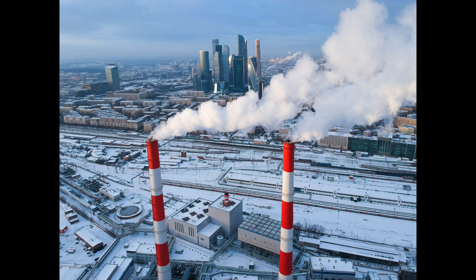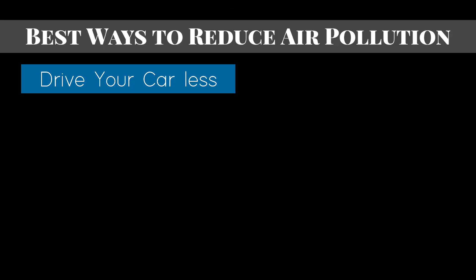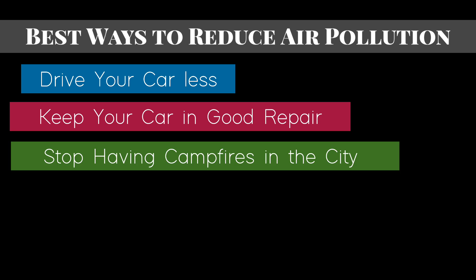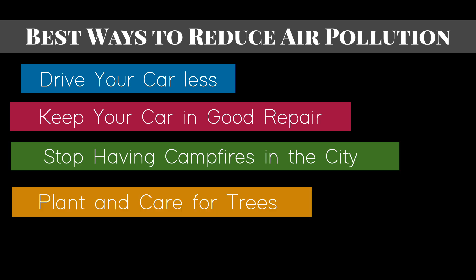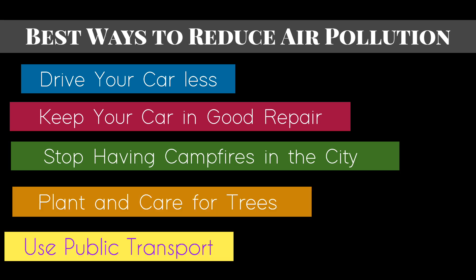Here are some best ways to reduce air pollution: Drive your car less. Keep your car in good repair. Stop having campfires in the city. Plant and care for trees — trees filter pollutants and absorb carbon dioxide. Trees also release oxygen into the atmosphere and help cool our homes. Use public transport rather than using cars.